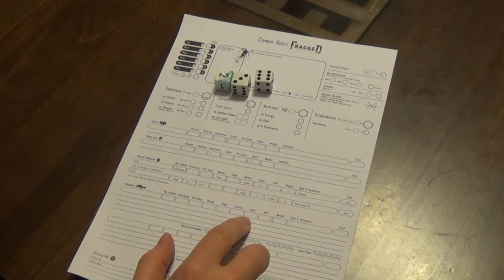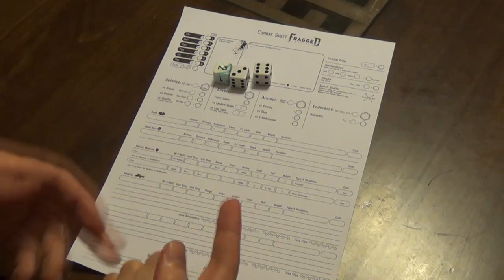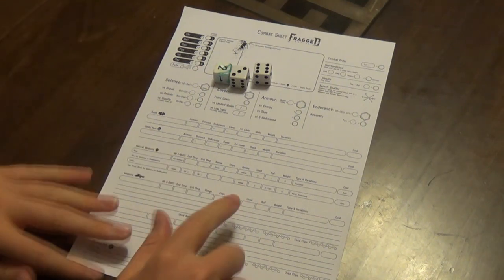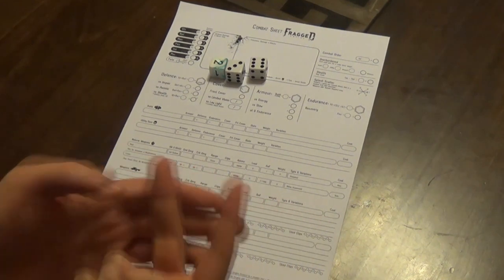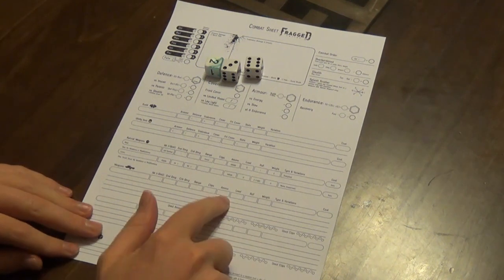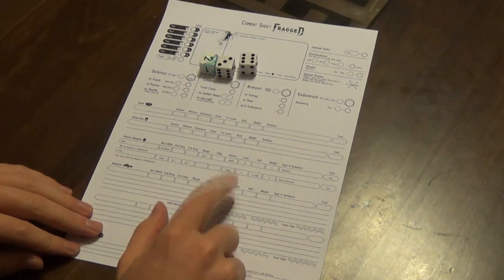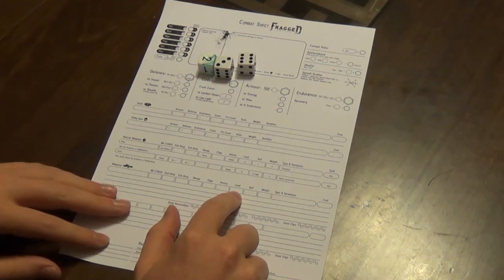So if you've got a pistol and it's load 1, you've got two actions per turn. You spend your first action to draw it and then your second action you can shoot it. Whereas like a load 2 rifle—for your turn you would spend both of your actions drawing your weapon, then you shoot, and then it would take you two actions to reload it. Quite important, as it can slow you down in combat quite a lot.